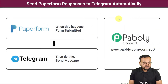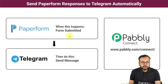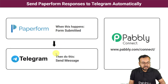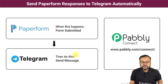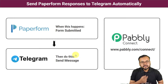In this use case we have created our customer service request form with the help of Paperform. As and when any customer fills this form to submit their request for any services you provide, a message will be delivered to your team on a Telegram group automatically, stating that this customer needs this type of service. We are using Pavli Connect, an integration and automation tool, and the best part is you will not require any coding skills or programming knowledge. Anyone can set up this automation very easily.